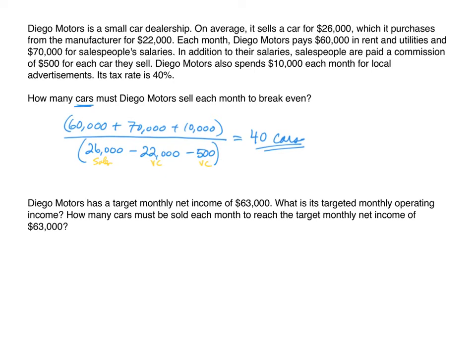The next question states Diego Motors has a target monthly net income of $63,000. What is the targeted monthly operating income? From operating income we subtract taxes to get net income. With a tax rate of 40%, net income must be 60% of operating income.